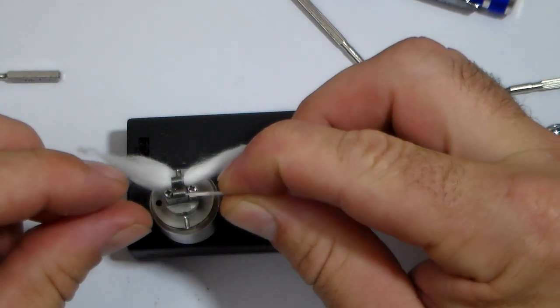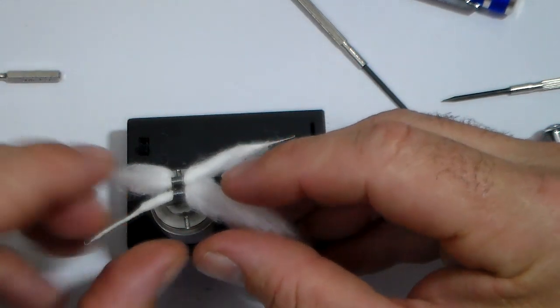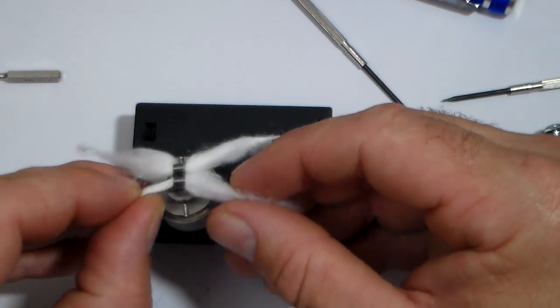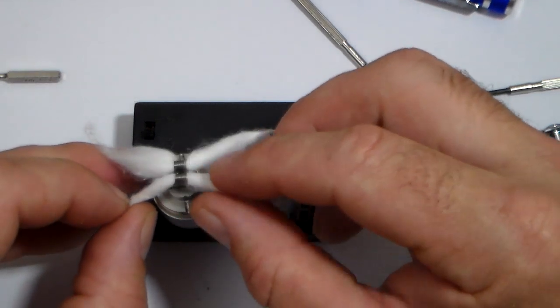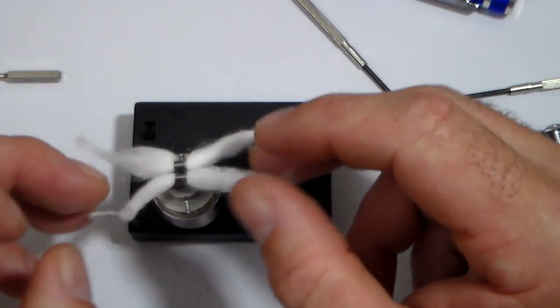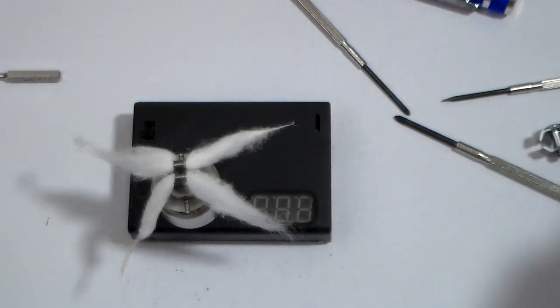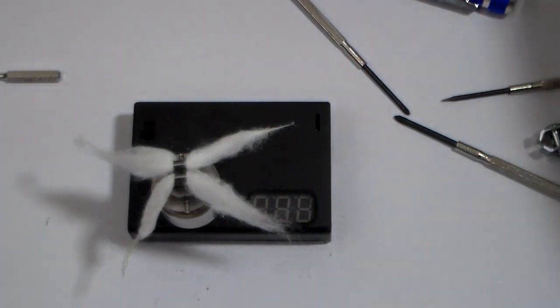Come over to our second one. And this is fairly loose in here with the cotton. I don't want to go too crazy and pack them coils too tight. And so there we go, there's our second one.